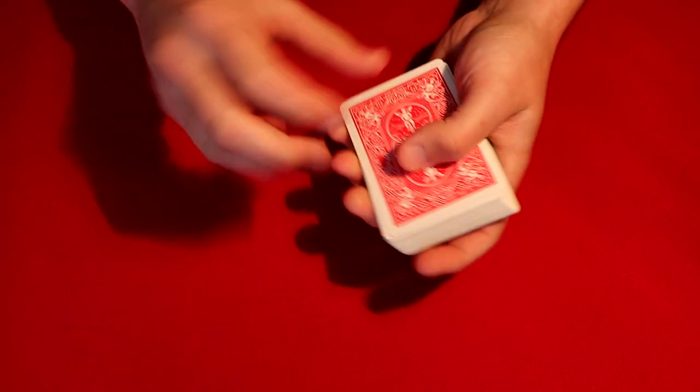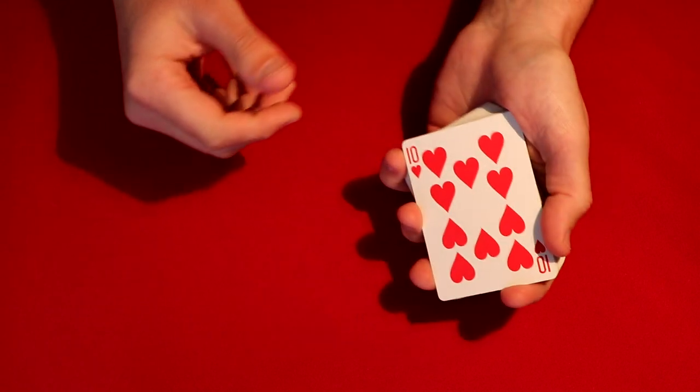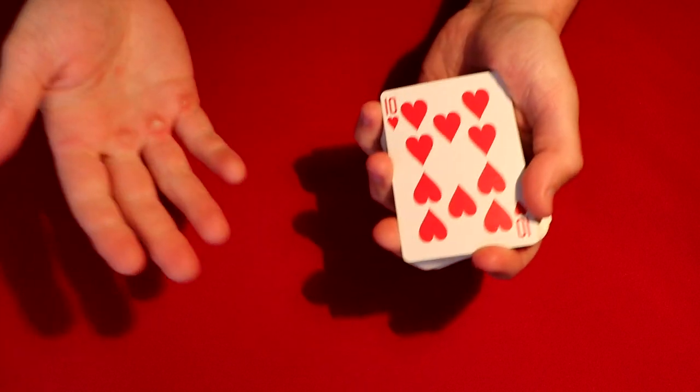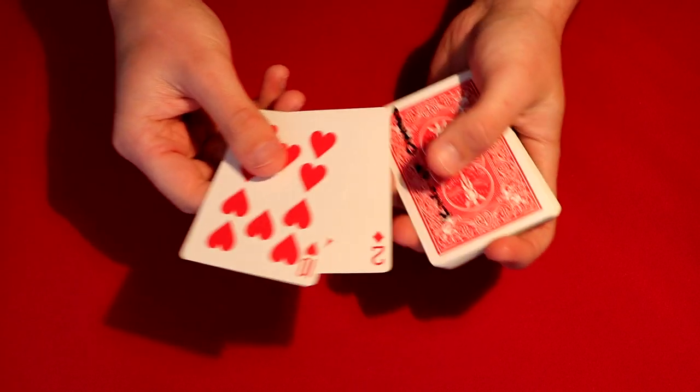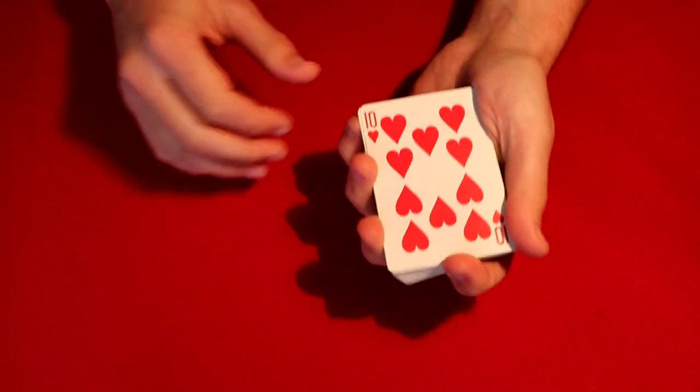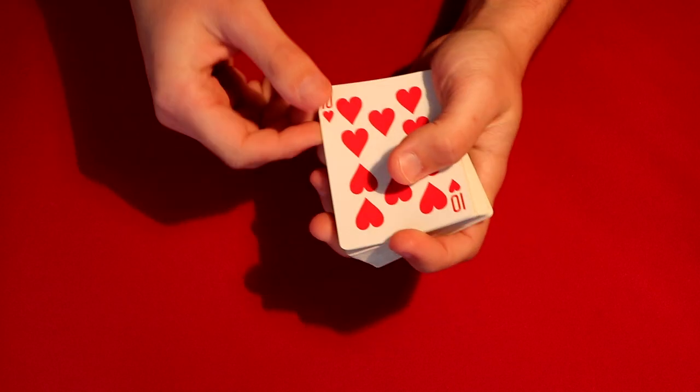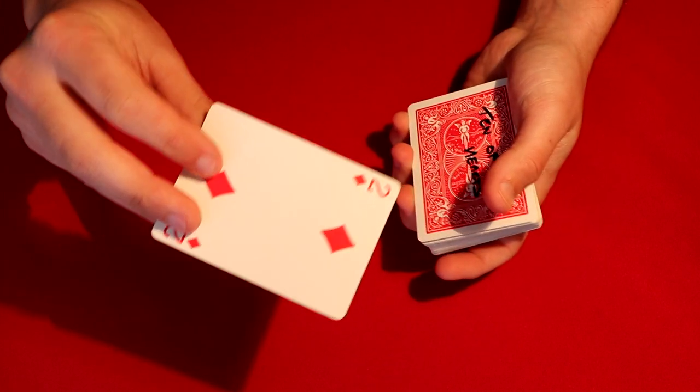Now where the video starts, it looks like he does a double lift. So he takes two cards and shows the spectator, and she goes, 'Oh, that's not my card.' But in reality, he flipped over two cards and the two of diamonds is actually underneath. So he does the double lift, she goes 'That's not my card,' he flips it back over.